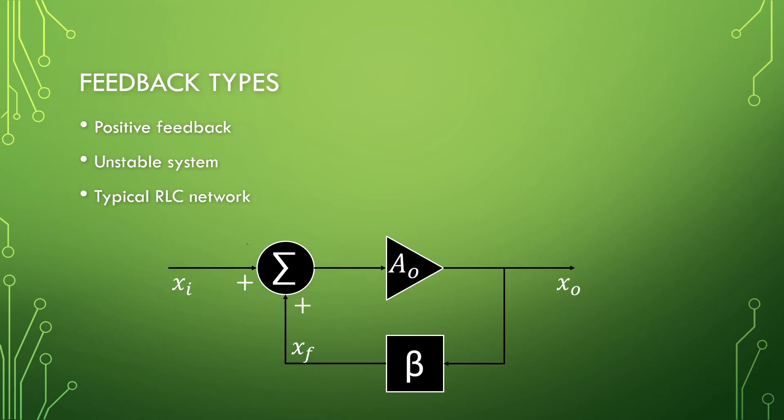Positive feedback is an unstable system. So this beta network here is typically your RLC network, LC or RC, whatever kind that you will be using in here. And we will make use of positive feedback. Or if it's a negative amplifier, the system should ensure that there is a 180 degree shift, so that the feedback becomes positive. So for oscillator, we do want the instability of the system.